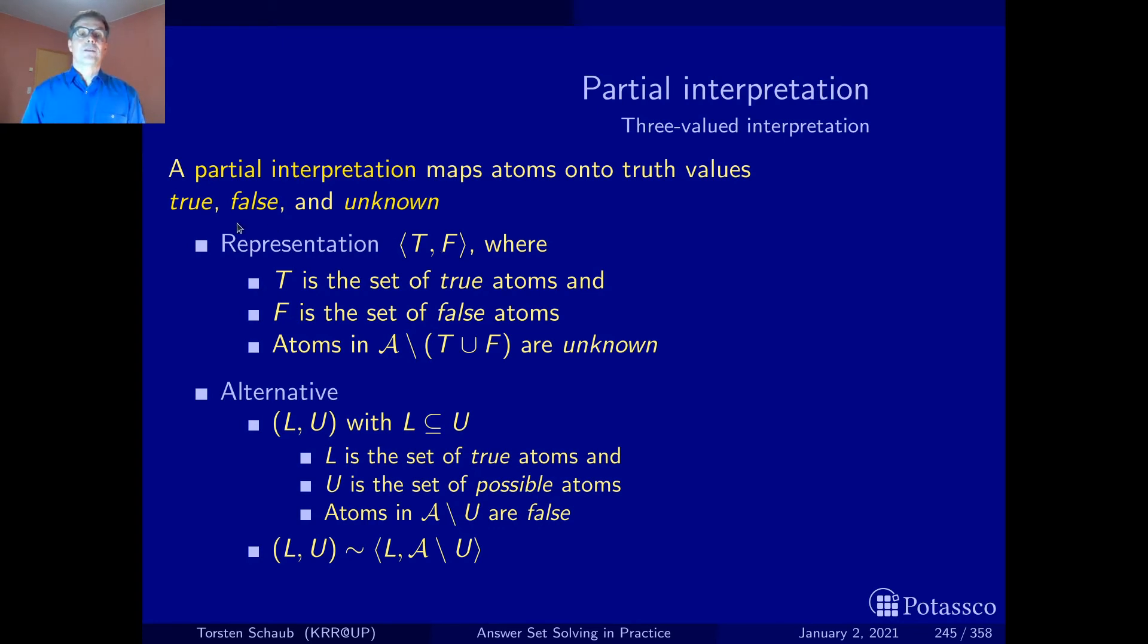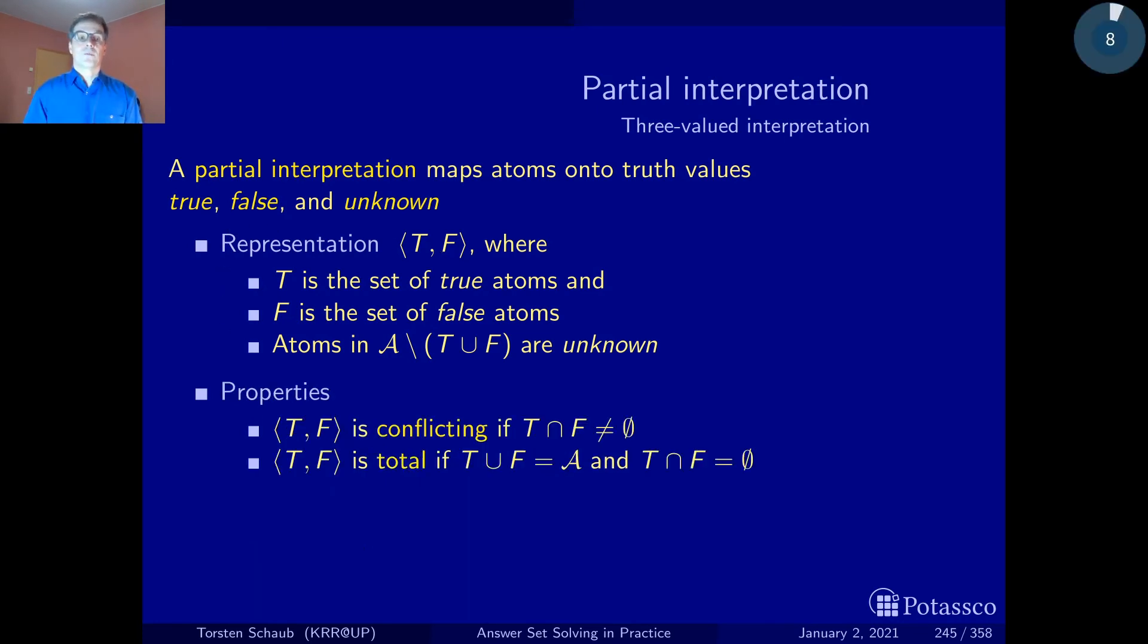Once we have committed to this representation, we can talk about some properties. We can say that a partial interpretation is conflicting. Conflicting means we have assigned a variable both true and false. Then there is the case where we have a three-valued interpretation that is free of any unknown values where we have assigned true and false to all variables. This is called total. It's complete in the sense that we have assigned all variables and it's non-conflicting.